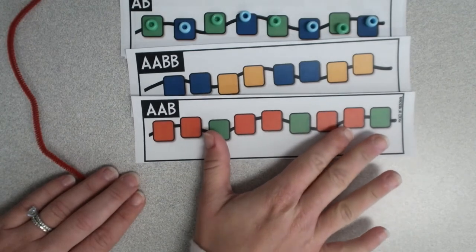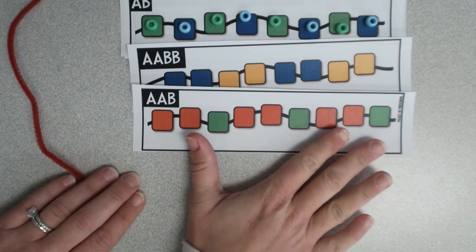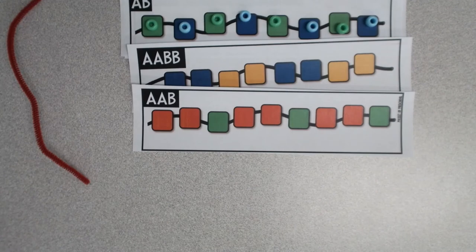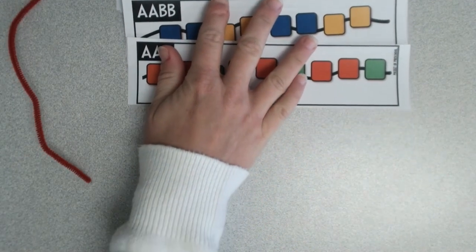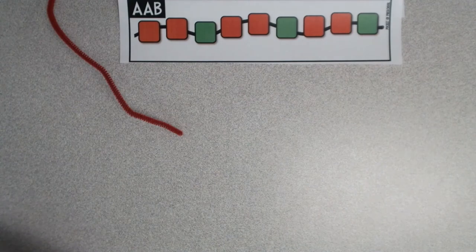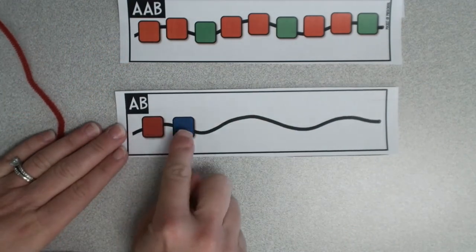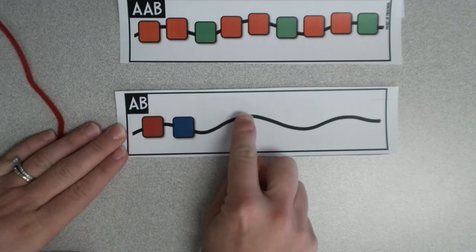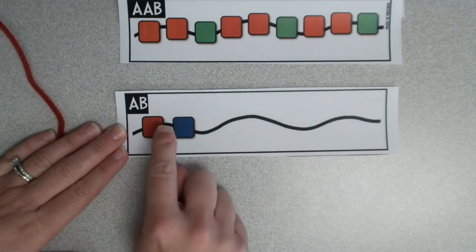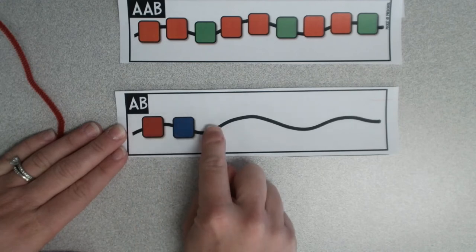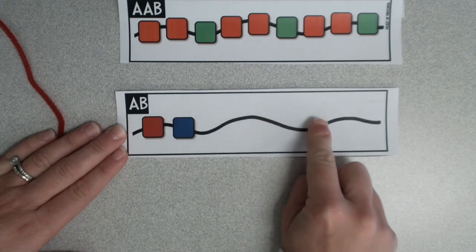After your children have been able to accomplish their patterns, see if they can do something called extending a pattern. Now extending a pattern looks like this. You start the pattern and let them continue the pattern. Red, blue. What comes next? Red, blue. Red, blue.